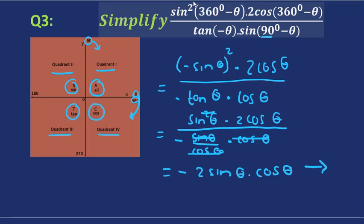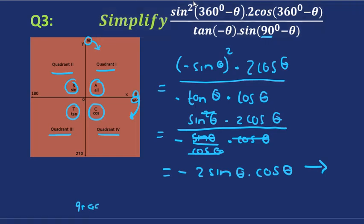But of course, we know in grade 12 that there is actually a double angle identity. So if you're in grade 12, you can simplify this further. For grade 12, the solution would be the double angle form.